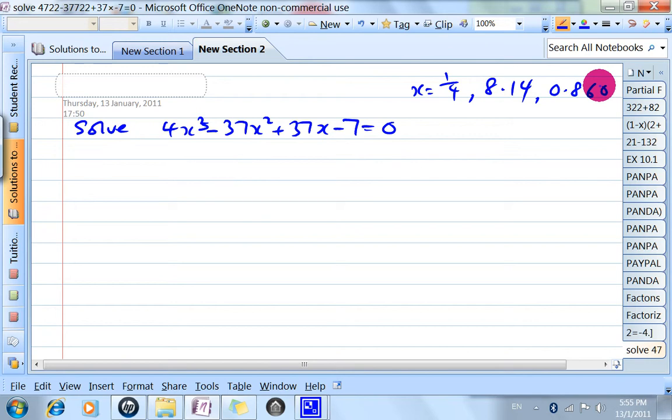So we are going to get started with synthetic division. Write down the coefficients: 4, -37, 37, -7. The factor we know is 1/4.